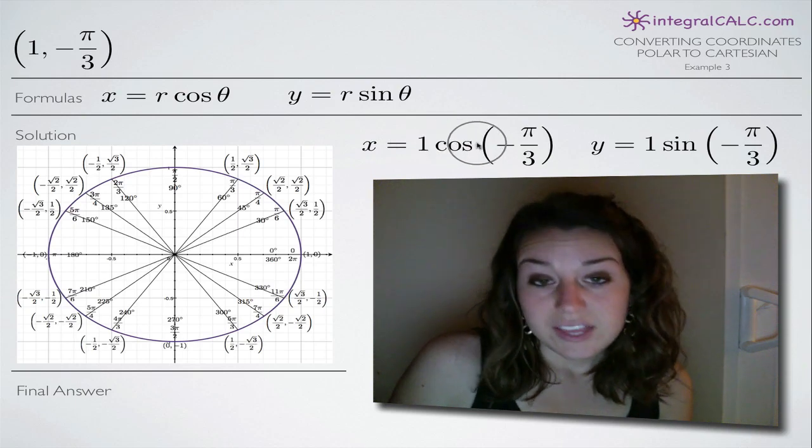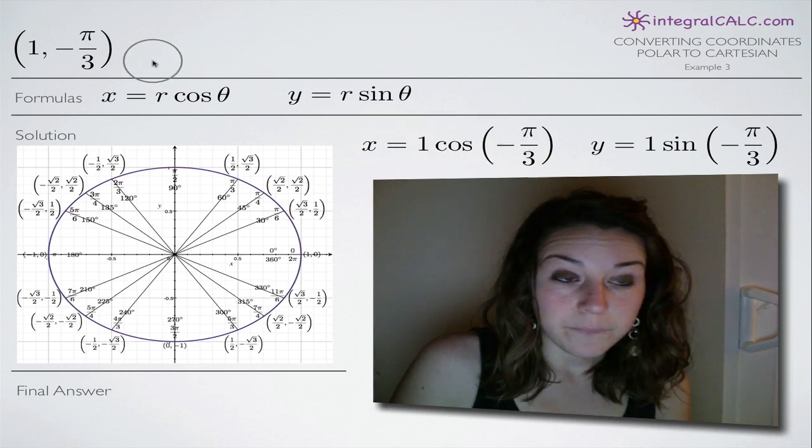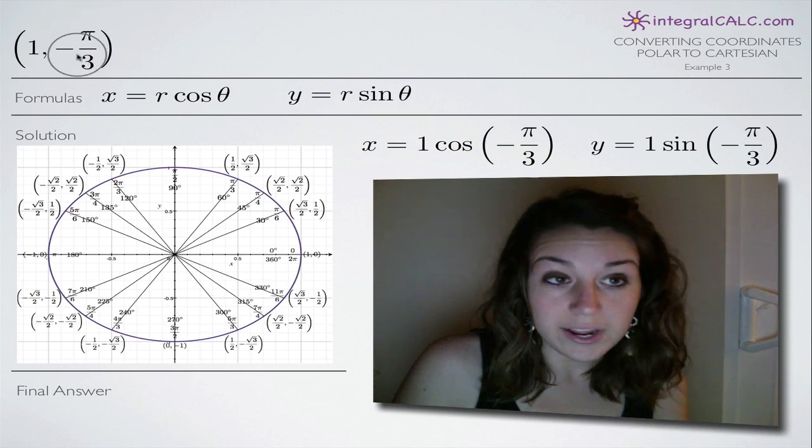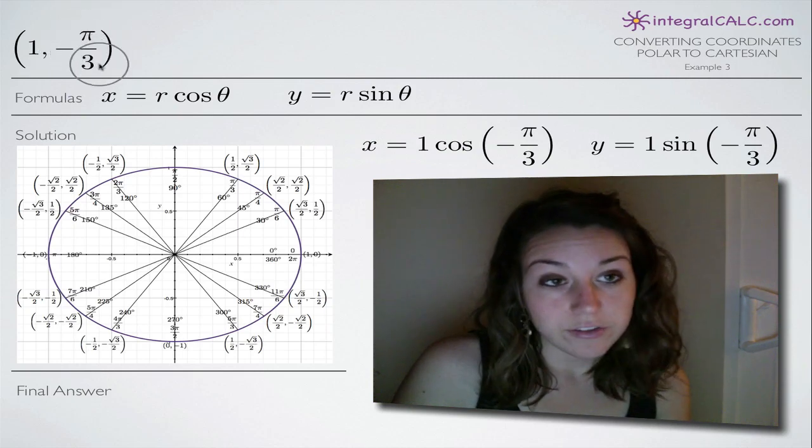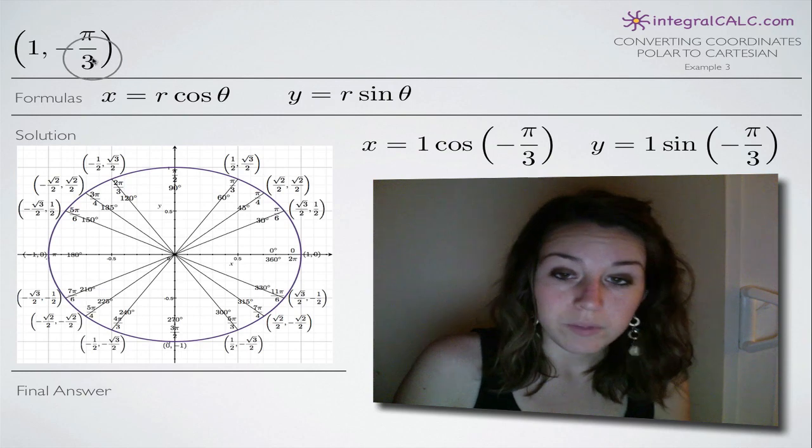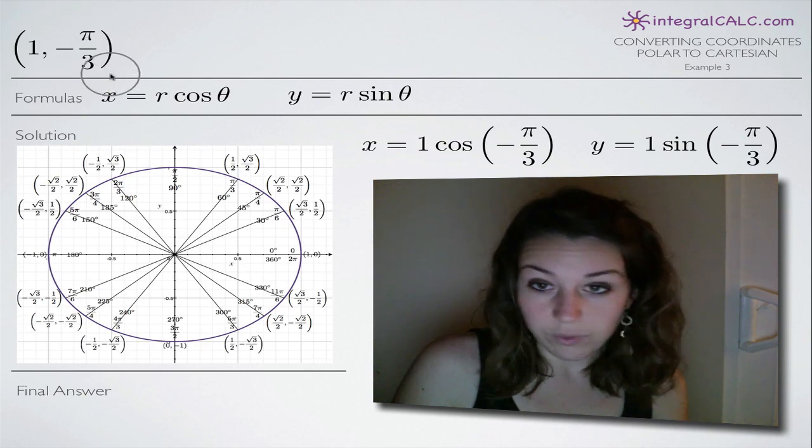So one interesting thing about this problem is that they've given us a negative theta or a negative angle, and there's two ways to look at this. We can either deal with the negative as it is or we can convert it. So first, let's talk about how we would just deal with it as is.